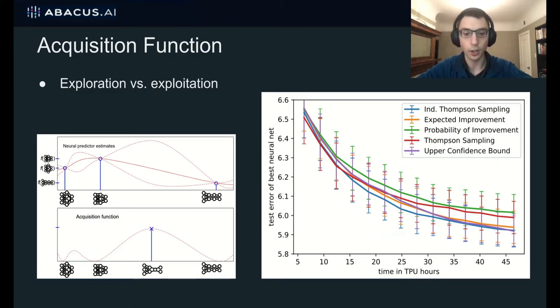So next I'll talk about our analysis on the other BO parts of this framework. So, we look at the acquisition function, which is important because this is what handles the exploration versus exploitation part of the search algorithm. And we test five different acquisition functions and we find independent Thompson sampling performs the best closely tied with expected improvement and upper confidence bound. And as it turned out, this varying this component had less effect than if we varied other components in our framework.